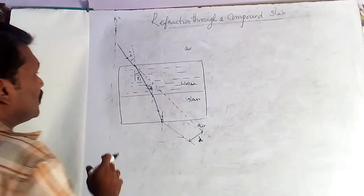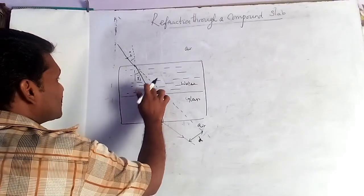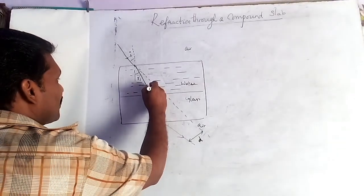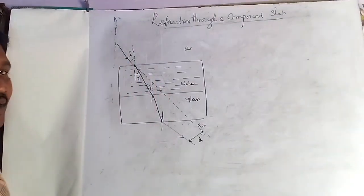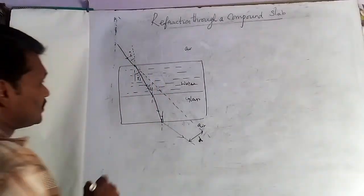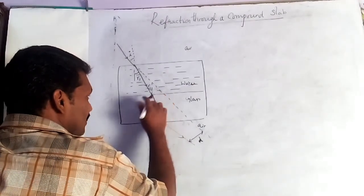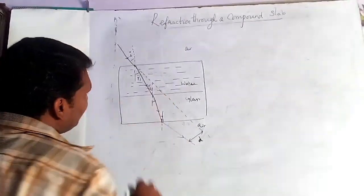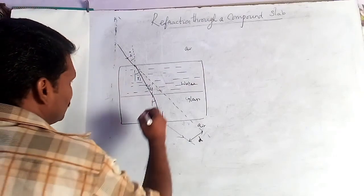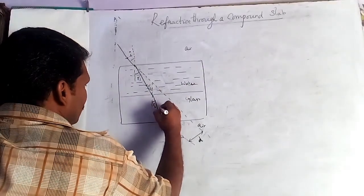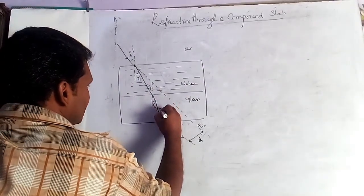Here R1 equals R2, so we can write R1, because they are alternate angles. This gives the angular refraction, and here R2 similarly follows the same reasoning.